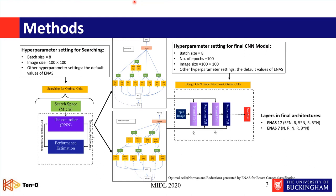This is the first time the micro search space is used for designing a CNN architecture for breast cancer classification from ultrasound images. The micro search space searches for cells instead of an entire network. In each search, it generates two types of cells: a normal cell and a reduction cell. The reduction cell performs dimensionality reduction using stride 2.